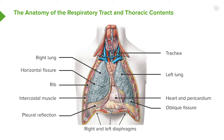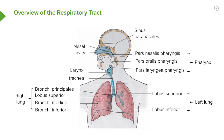Above the thoracic cavity, we have the trachea, which takes air in and out of the lungs and up into the upper airways in the neck. This is a more schematic diagram showing the airways in their entirety, starting at the nose, moving on to the pharynx — which is at the back of the nose — and then the larynx, the trachea, the bronchi, and then the lungs at the end of the respiratory tract.